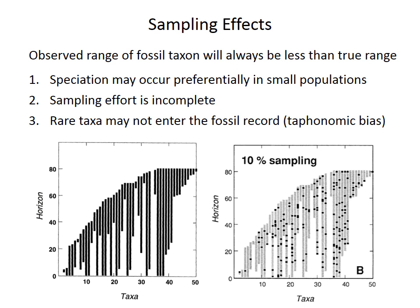However, that assumption of synchronicity may not be true for a variety of reasons. First, the observed fossil range of a species is always less than the true range of that species. If speciation occurs in small populations, the species is likely to be geographically restricted when it first originates and later spreads to other regions. That time gap may not be significant geologically speaking, but it could also be — it's difficult to tell.